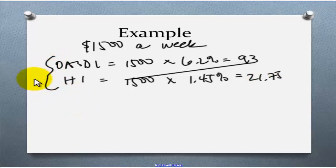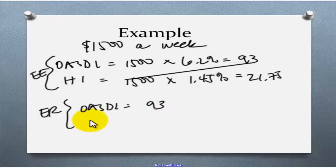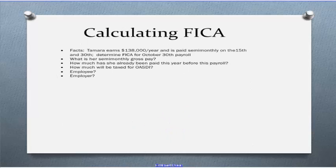This would be the amount taken out of the employee's paychecks. Then the employer would pull out of his own pocket the same 6.2%, so $93, and for HI, he'd have to pull out $21.75 out of his pocket for that. Let's look at an example where we do have to worry about the cap.